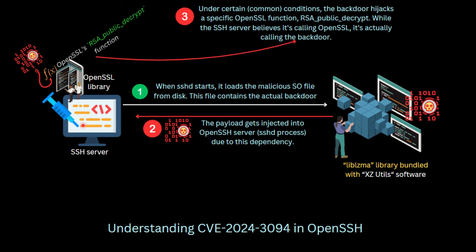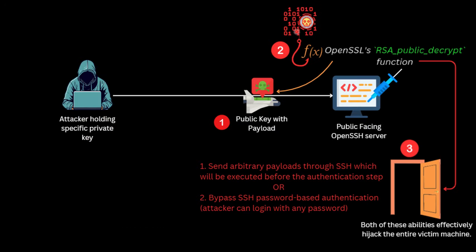After this hooking, the backdoor manipulates SSH behavior. When an attacker sends a public key with a payload, the backdoor intercepts it and grants authentication bypass to the attacker by running command operations. The backdoor is able to identify and verify the attacker's public key because it contains a hard-coded symmetric encryption key and hard-coded information about the attacker's public key. This allows it to watch all conversations the OpenSSH server has during the SSH handshake with clients.